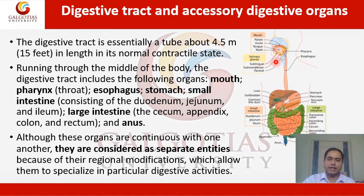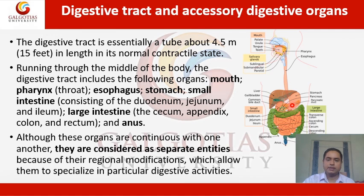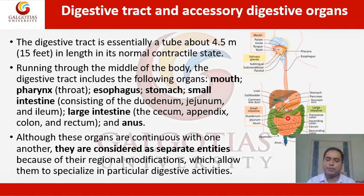The digestive tract is essentially a tube about 4.5 meters (approximately 15 feet) in length in its normal contractile state. Running through the middle of the body, it includes the mouth (with palate, tongue, and teeth), the pharynx, the esophagus, the stomach, the small intestine (with three parts: duodenum, jejunum, and ileum), and the large intestine (with colon, cecum, and rectum), as well as the anus. These organs are continuous with one another but considered separate entities because their regional modifications allow them to specialize in particular digestive activities.